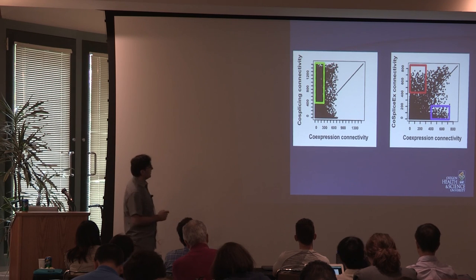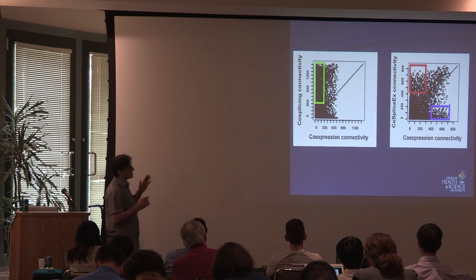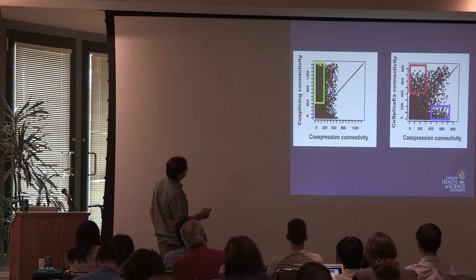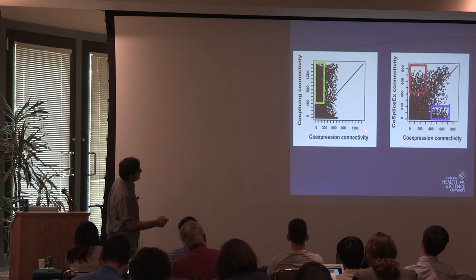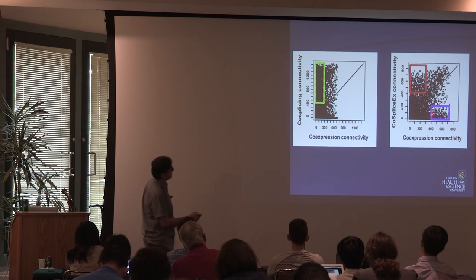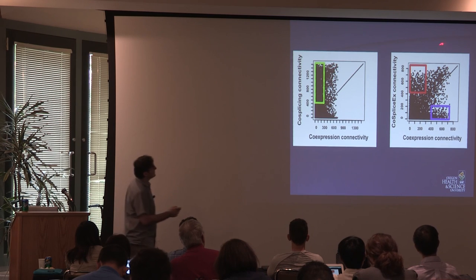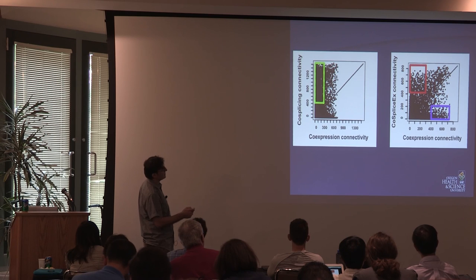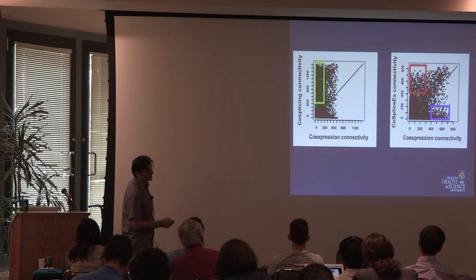Now I'll compare the hubs in these networks. I chose co-splicing hubs in the top 20% of connectivity in the co-splicing network but in the bottom 80% of the co-expression network. Here I have co-expression hubs that are only co-expressed and not co-spliced. And these are hubs that are only co-spliced but not co-expressed. The Canberra distance captures both co-expression and co-splicing. I want to emphasize that even the co-splicex using Canberra has different properties than the co-expression hubs.